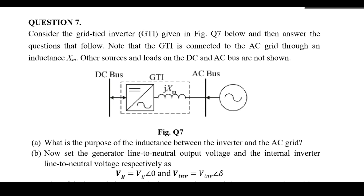On this side we have a DC bus — it is connected to a DC bus. On this side we have an AC bus. The inverter converts DC voltage to AC voltage. This input comes from the DC source, which could be solar. The AC voltage is fed into the AC system through the AC bus, and on the other side we have a generator also feeding into the same AC bus.